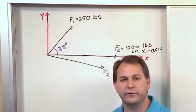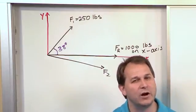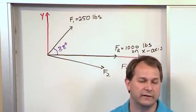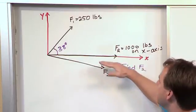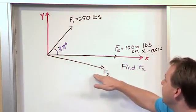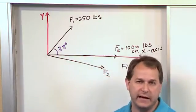So we're given the magnitude of the resultant, and since we know it lies along x, we're also really given the direction of the resultant, right?